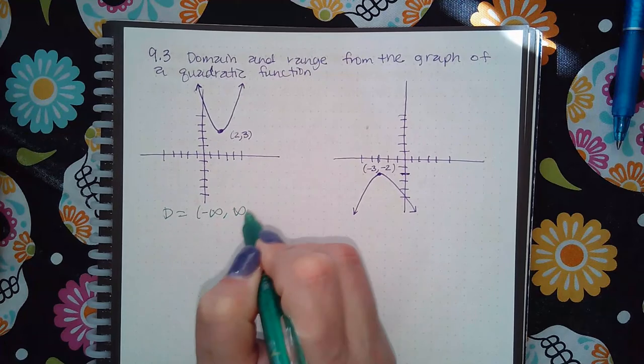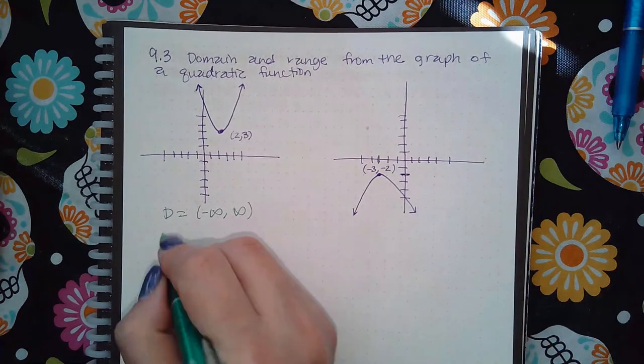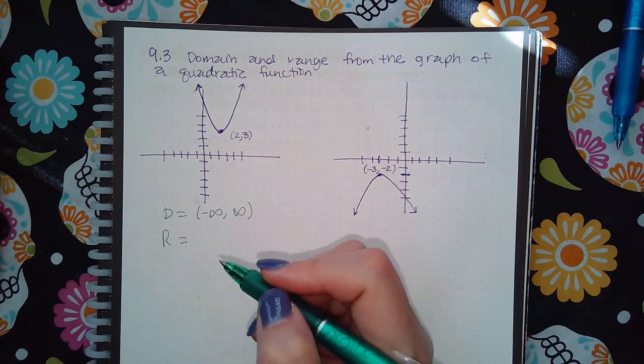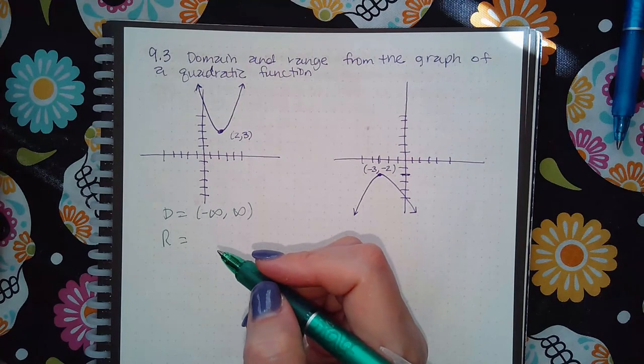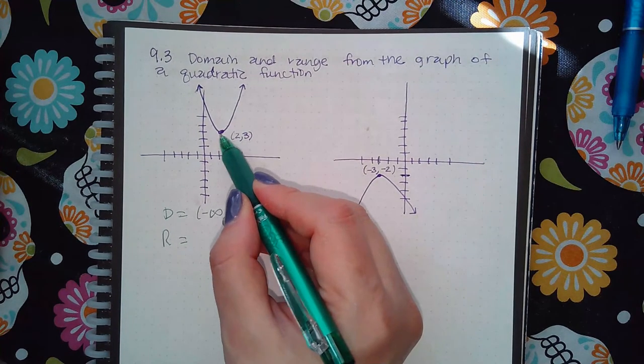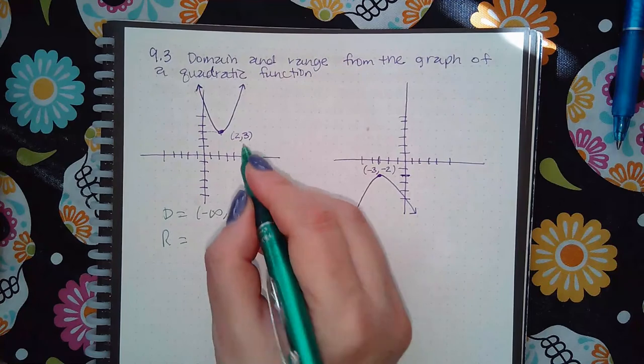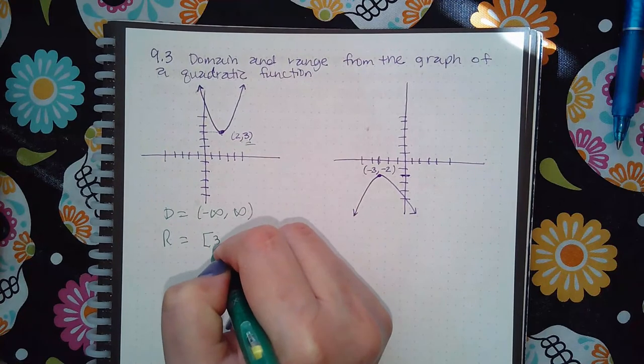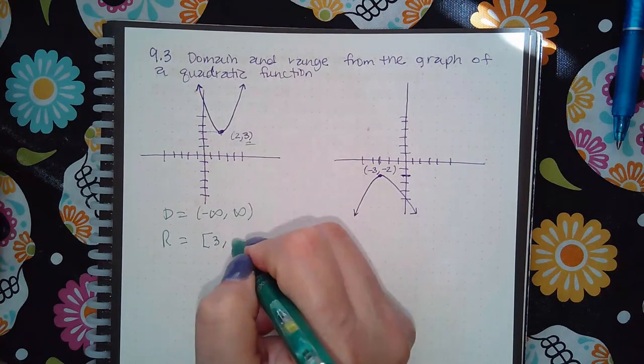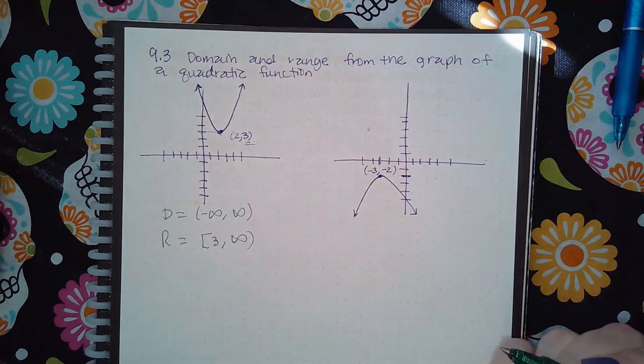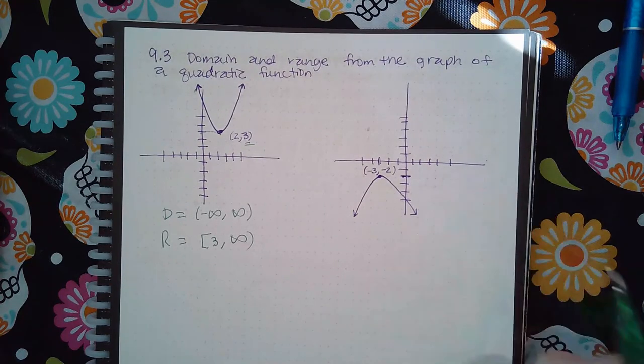Now the range is from the bottom to the top. You have to use y-values. This is the lowest it's going to go and that y-value is 3. Then how high does it go? It goes up forever, which means positive infinity.